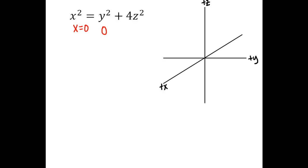If we plug in x = 0, we get 0 = y² + 4z². This equation looks a little bit like the equation of an ellipse — both variables are on the same side with the same sign on the coefficient, but different values for the coefficient. However, this is not exactly like the equation of an ellipse because the constant term is 0, and in standard form we would like to have 1 for the constant term. This is a degenerate case of an ellipse.